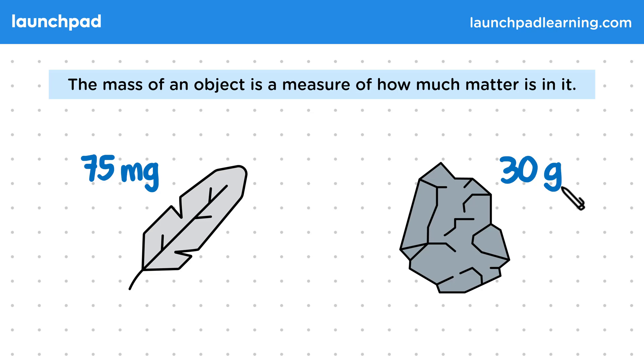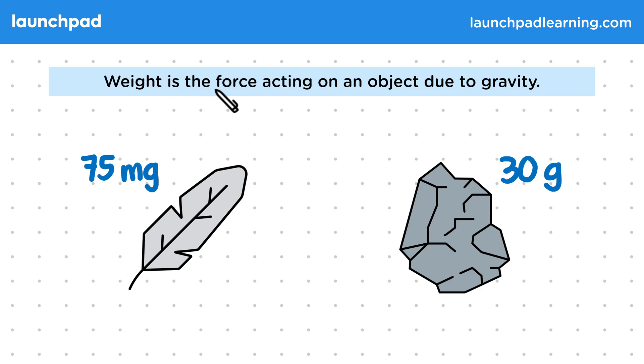So is this same as the weight of the object? Well, weight is the force acting on an object due to gravity. Remember that a gravitational force is the attraction between two objects that have mass, but it only becomes noticeable for objects with a larger mass.